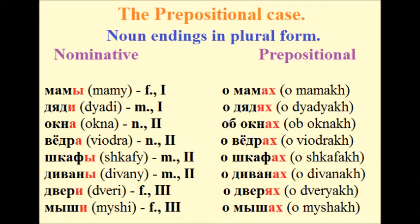If you remember the instrumental case and the noun endings there in plural form, you know there were only two endings. The same thing happens in the prepositional case — of course the endings will be different, but there will be only two of them. Let's look at the examples and then at some sentences.